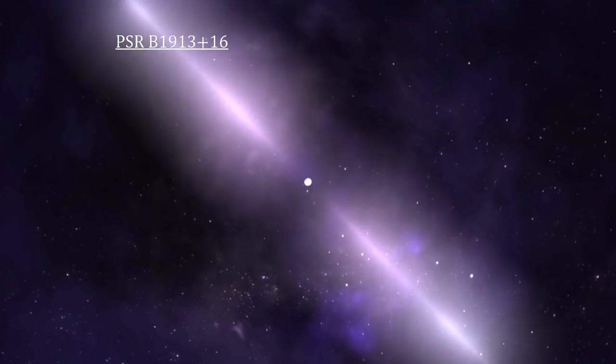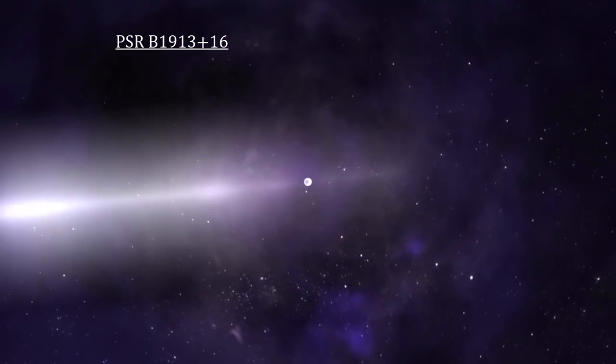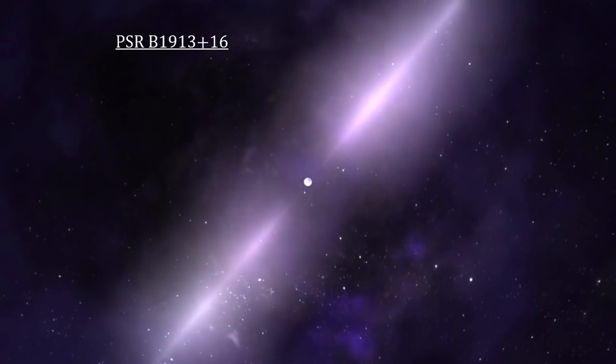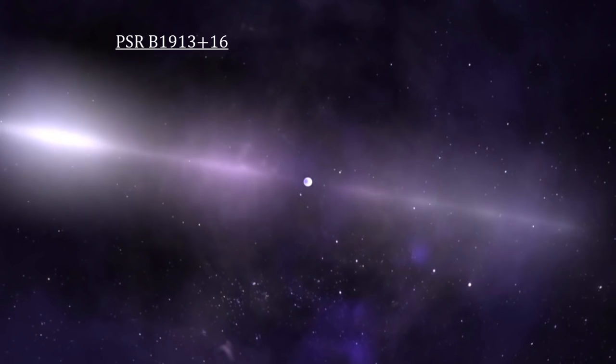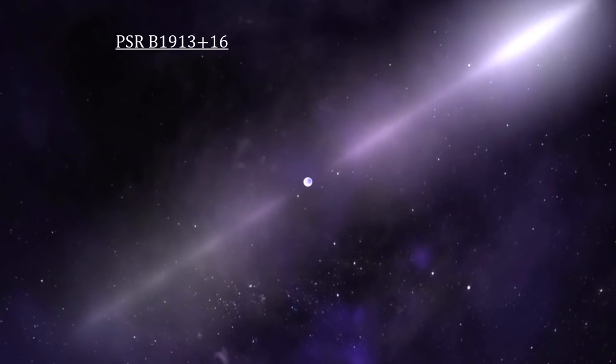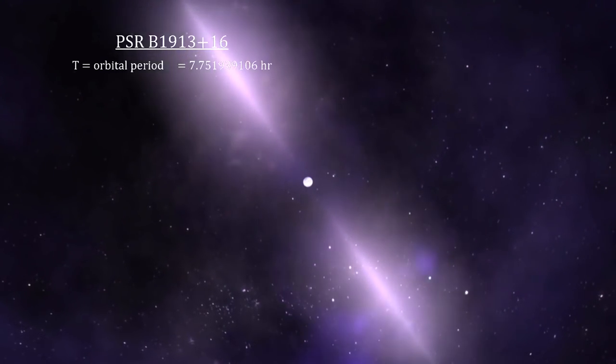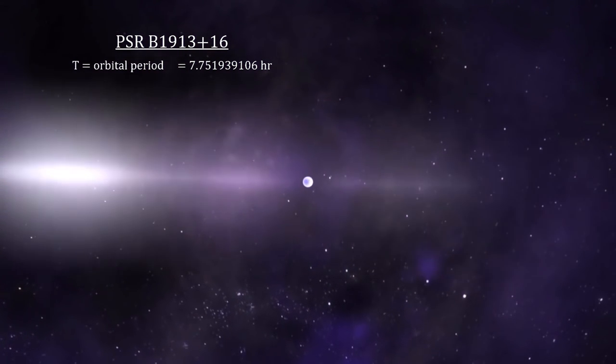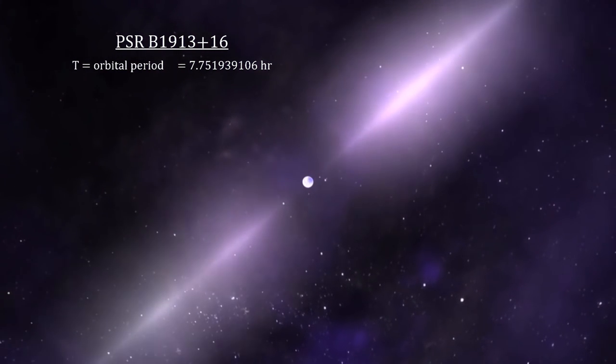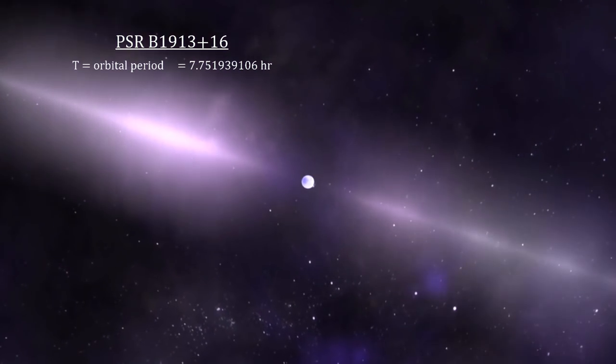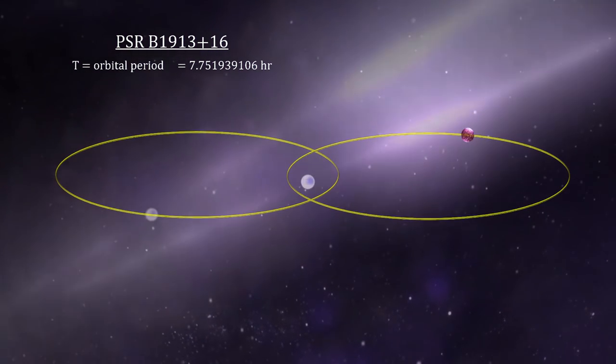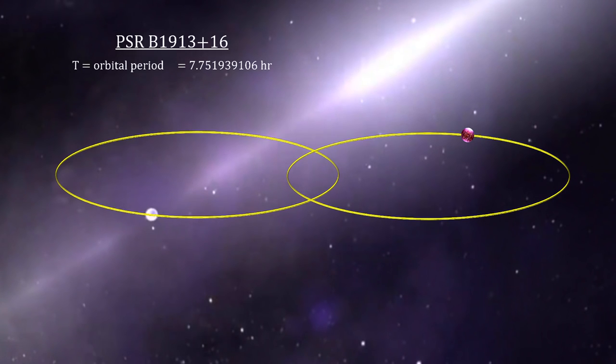This one was pulsing every 59 milliseconds, indicating that the pulsar rotates 17 times per second. But Hulse and Taylor noticed that the pulsar's pulses varied regularly every 7¾ hours, with pulses arriving 3 seconds earlier at some times relative to others. This meant that the pulsar was in an elliptical orbit with another neutron star. This was the first binary neutron star ever discovered.